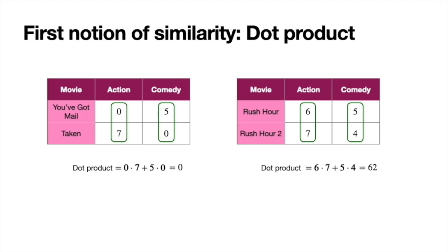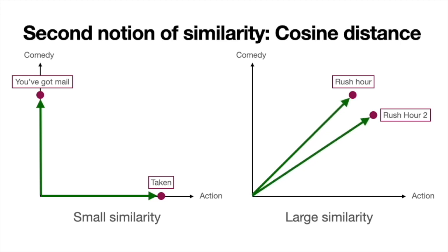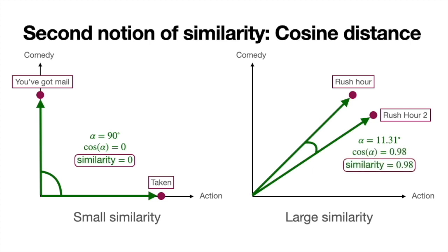Dot product is a very useful notion of similarity, but let me show you another one called cosine similarity. As its name hints, somewhere there is the cosine of an angle. Looking at the embeddings geometrically, we take the angle between the two rays formed by the origin and each of the movie points. For You've Got Mail and Taken, the angle is 90 degrees, whereas for Rush Hour and Rush Hour 2 it's a much smaller angle — 11.31 degrees. Taking the cosine: cosine of 90 is zero, so similarity is zero for the different pair. For the similar pair, the cosine is 0.98. One advantage of cosine similarity is that it's always between minus one and one, so the largest similarity two sentences can have is one, which occurs when we compare a sentence to itself.